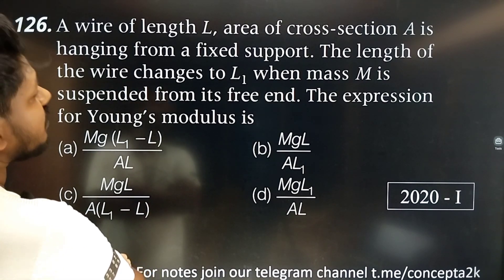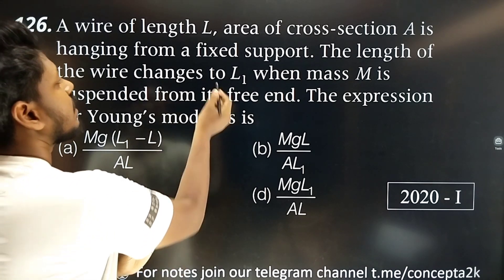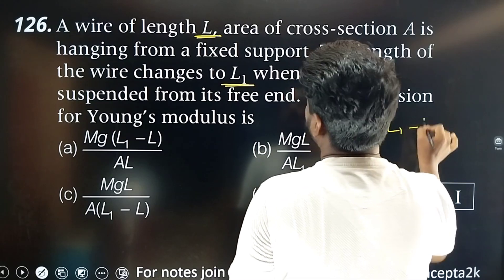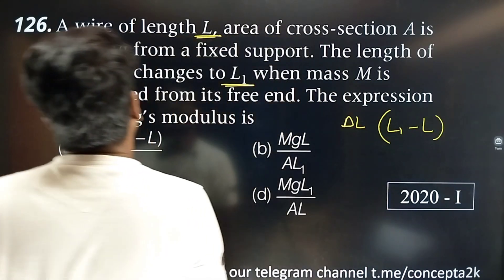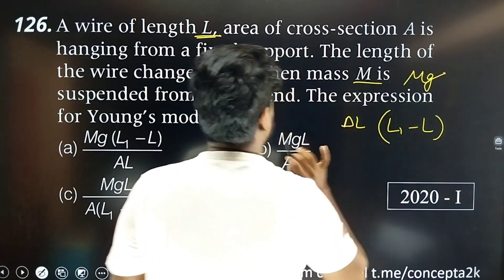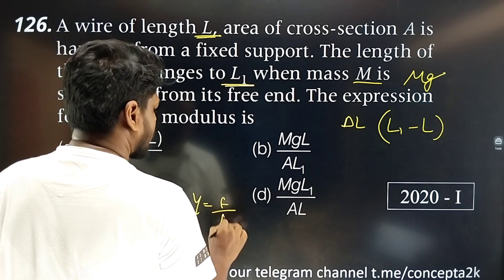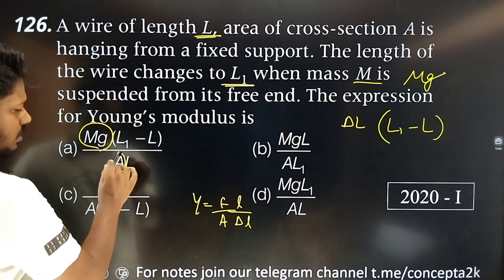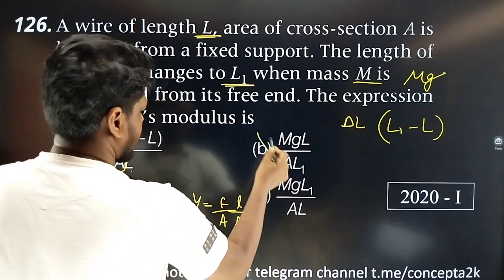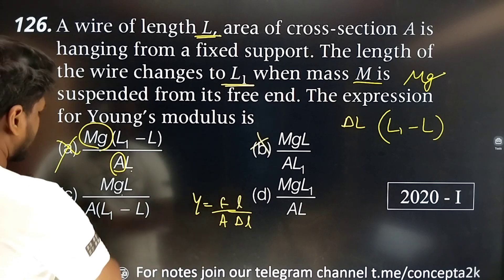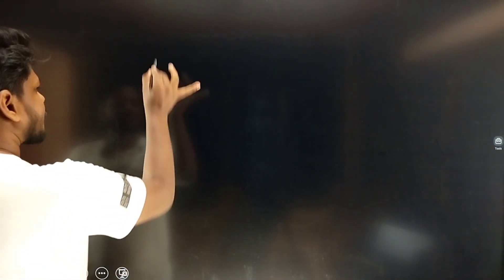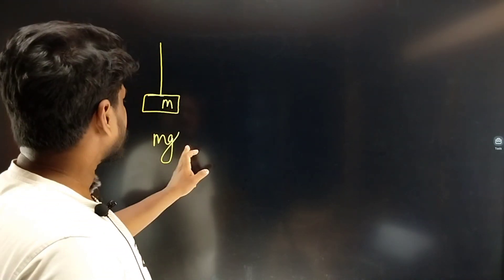A wire of length L and area of cross-section A is hanging from a fixed support. The initial length, final length, and change in length are noted. Change in length equals final minus initial, which is delta L. The force is M into G. Using Young's modulus formula: force upon area divided by change in length over original length, substituting M into G and the area.